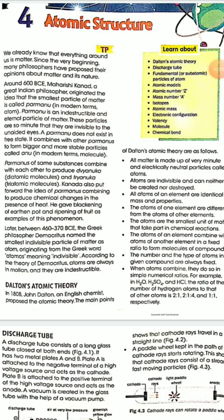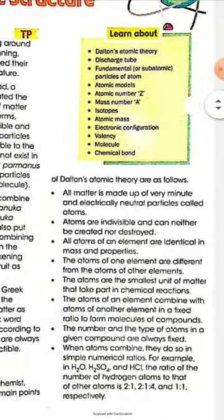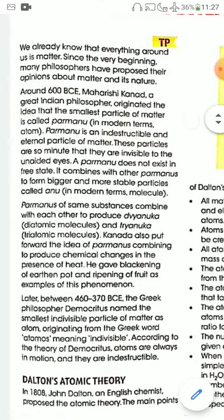Hello students, this is Latif sir. Today I am going to start a new chapter of class 8 chemistry — Chapter 4, Atomic Structure. In this chapter you have to learn about Dalton's atomic theory, discharge tube, fundamentals or subatomic particles of atom, atomic models, atomic number, atomic mass, isotopes, atomic mass, electronic configuration, valency, molecule, and chemical bond.